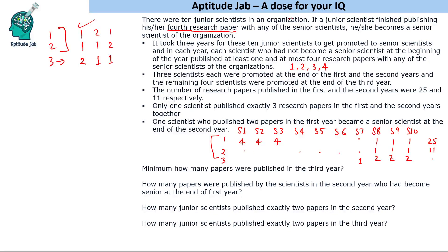We are also given that one scientist who published two papers in the first year became a senior scientist at the end of the second year. This scientist must have published two papers in year one and two papers in year two, totaling four papers, becoming a senior scientist at the end of year two.